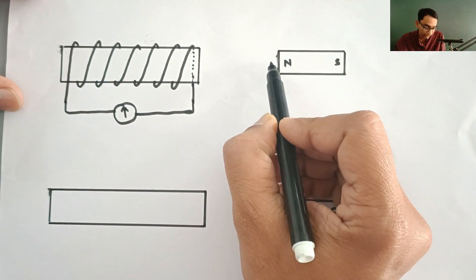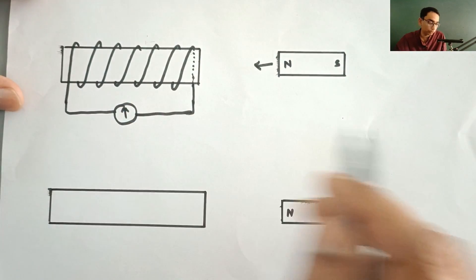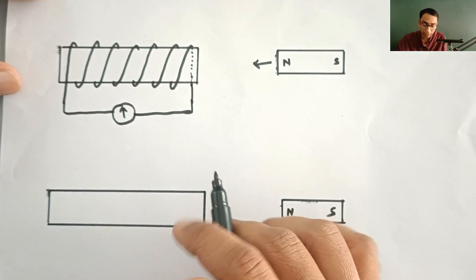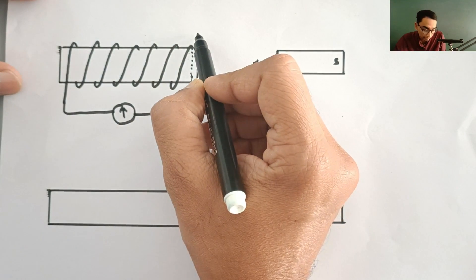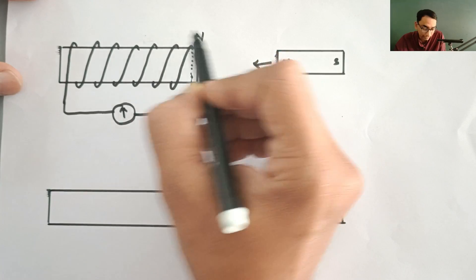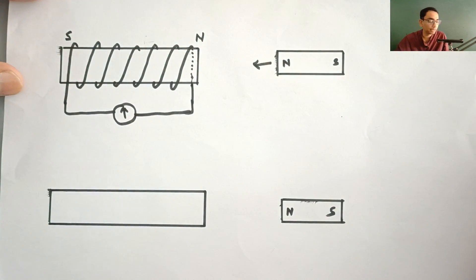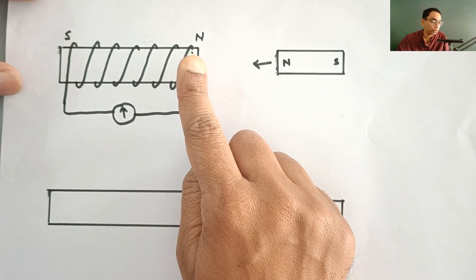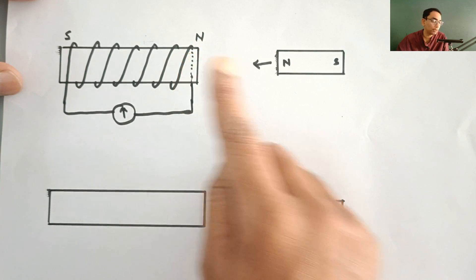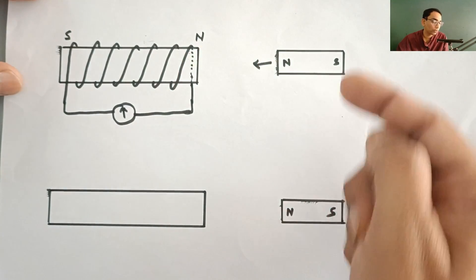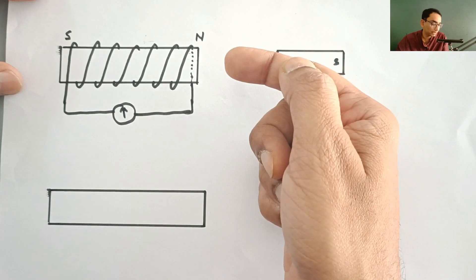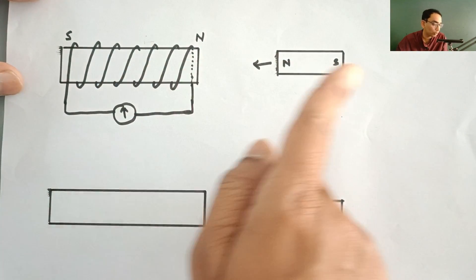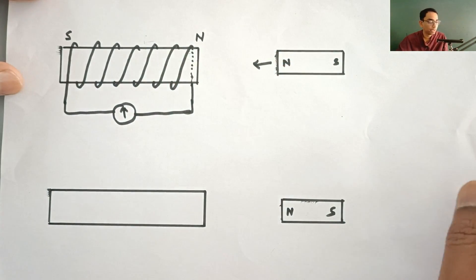Now, you are bringing the North Pole of this bar magnet towards this coil. As per Lenz's law, here the North Pole will be created and here the South Pole will be created — because that pole of the magnet will be created which will oppose the motion of this magnet. North is coming in this direction, so this North would be repelling and would oppose the motion in this direction.